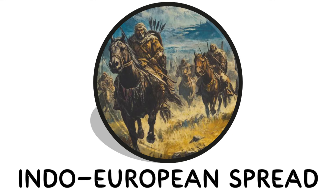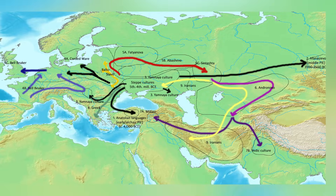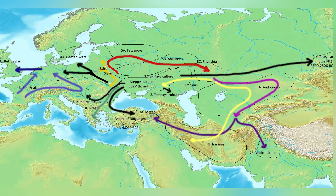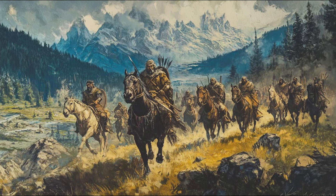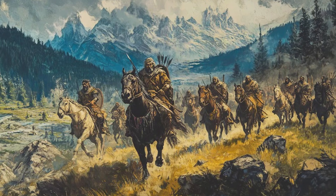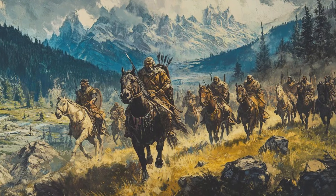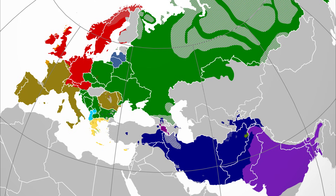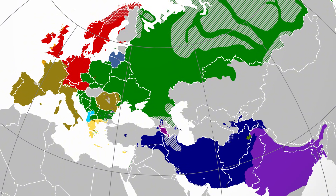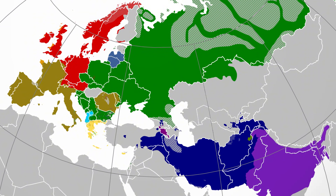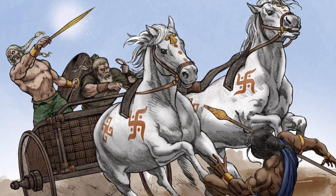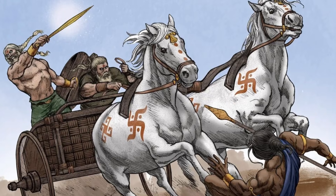Indo-European Spread. The Indo-European Spread describes the expansion of steppe populations from the Eurasian grasslands into Europe, Iran, and South Asia, beginning around 4,000 years ago. These groups are associated with innovations such as horse domestication, wheeled vehicles, and later chariots, which gave them greater mobility and military advantage. As they migrated, they spread Indo-European languages, many of which evolved into the major language families spoken across much of Europe and parts of South Asia today. The movement involved both large-scale population shifts and cultural influence, often blending with local societies rather than completely replacing them.